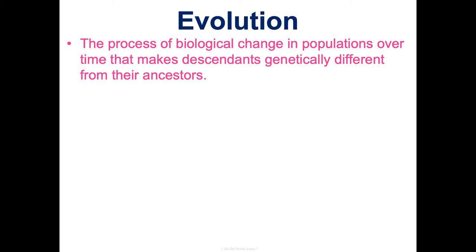Evolution is the process of biological change in populations over time that makes descendants genetically different from their ancestors. That sounds complicated but it's a lot simpler than it sounds. We're looking at change in populations — groups of organisms that live together in the same place. For instance, frogs in a certain pond that lived hundreds of years ago look genetically different from frogs living in that pond right now.